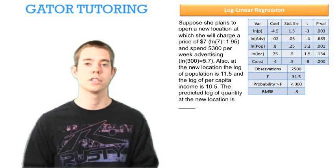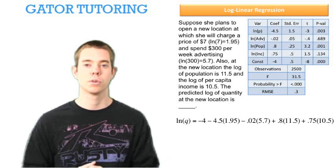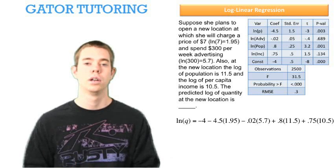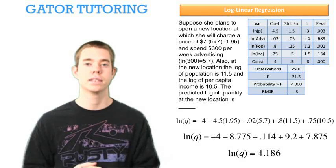They're just asking us what is the predicted log of quantity and they've given us all of our relevant numbers. So we can just plug in each component and add them up and we find that the ln of quantity after we've done some algebra is equal to 4.186.